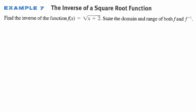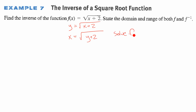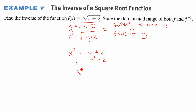Now let's find the inverse of a function algebraically. For f(x) = √(x + 2), we write y = √(x + 2), then switch x and y to get x = √(y + 2), and solve for y. We square both sides to get x² = y + 2, then subtract 2 from both sides, giving y = x² − 2. So the inverse function is y = x² − 2.